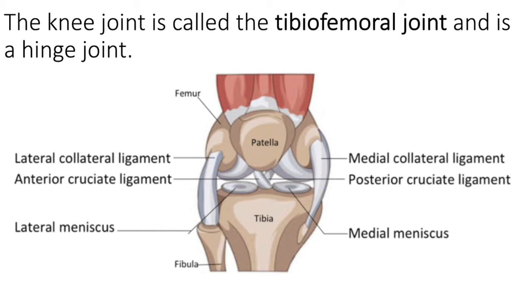Our last and final select joint is probably the one that experiences the most injuries, and that's the knee joint — more correctly called the tibio-femoral joint. It is a hinge joint and is the articulation between the distal epiphysis of the femur and the proximal epiphysis of the tibia.